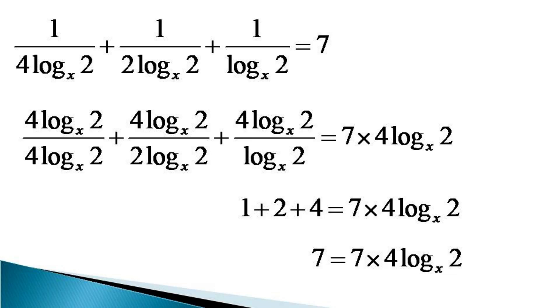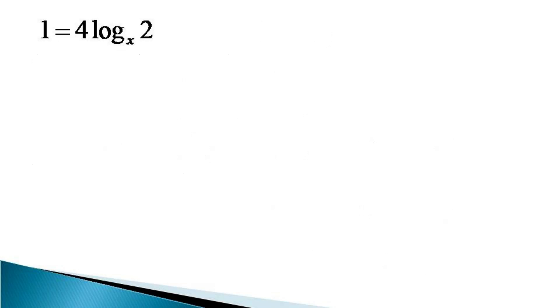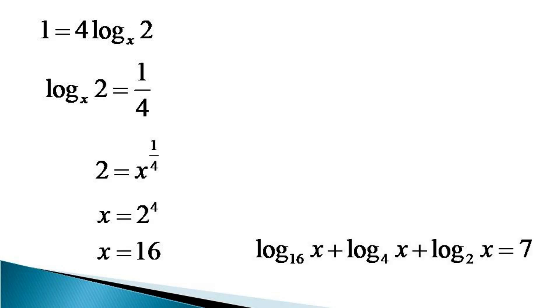7 from both sides gets cancelled and we get another equation as 1 is equal to 4 log 2 to the base x, or which can be written as log 2 to the base x is equal to 1 by 4. And from the definition of log, 2 can be expressed as equal to x raised to the power 1 by 4. And taking 4th power of both sides we get x is equal to 2 raised to the power 4, or simply the value of x comes as equal to 16. And it can be verified from the original equation that this value satisfies the equation and hence this is the solution for this equation.